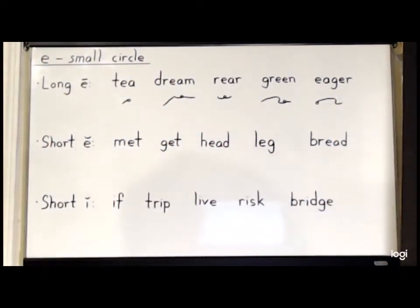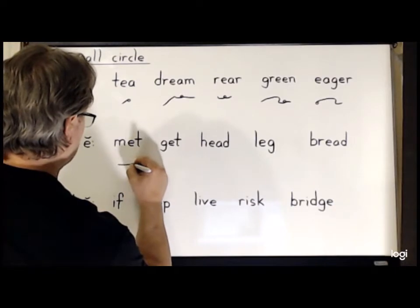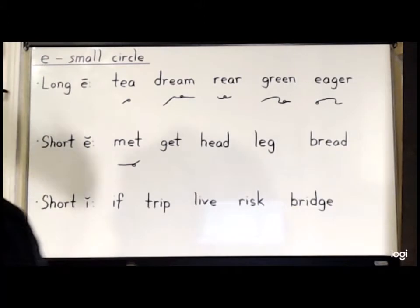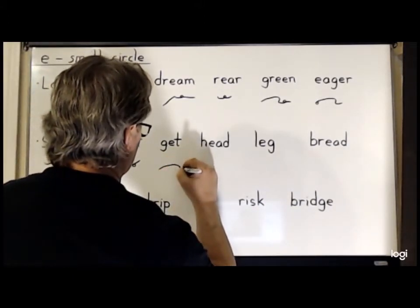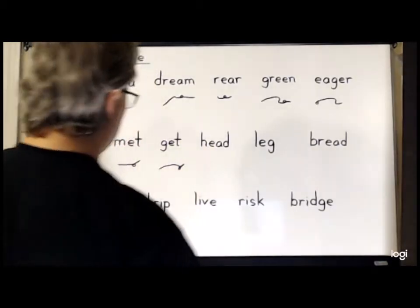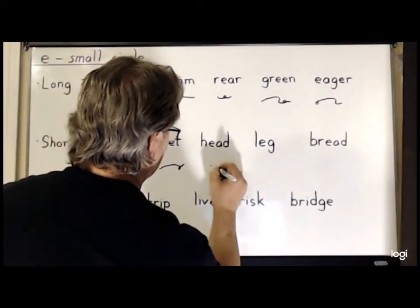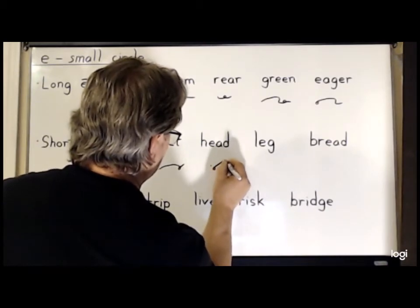Next is the short E, which is still represented by the small circle. So first, we have 'met', which is M, small circle, T. For 'get', it is G-E-T. 'Head' is H, small circle for the E, and D.